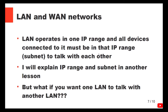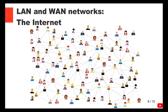A LAN operates in one IP range, and all devices connected to it must be in that IP range — also called a subnet — in order to talk with each other. I will explain IP range and subnet in another lesson. So all devices in your office or home must be in the same IP range to talk with each other. But what if you want one office to talk with another office — one in Dublin and one in New York or London? That's what the internet is used for.